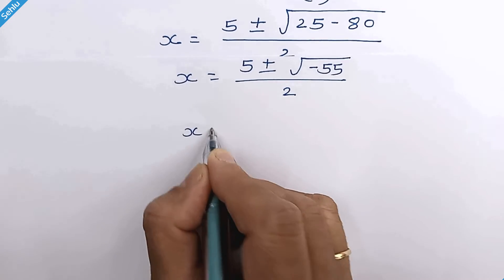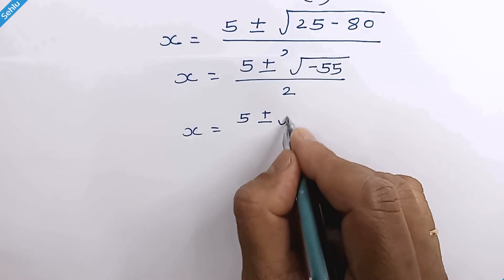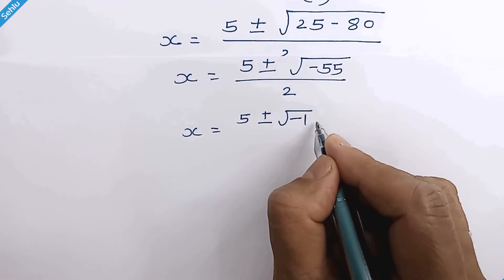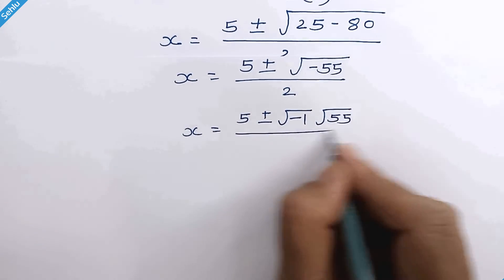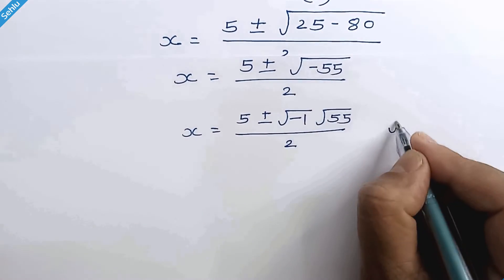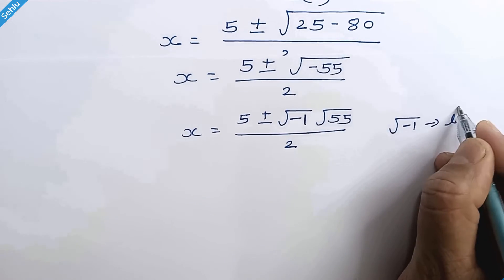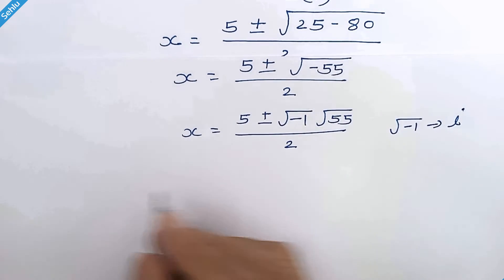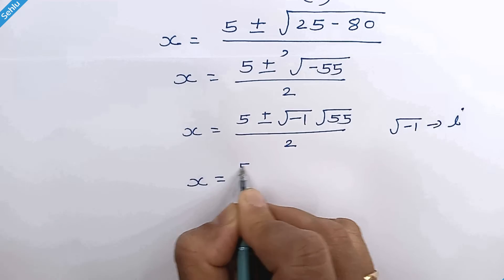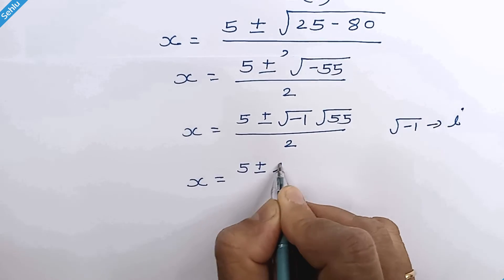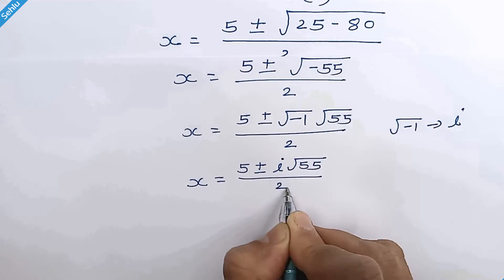So x is equal to 5 plus or minus square root of negative 1 times square root of 55 over 2. Now, square root of negative 1 is the imaginary number known as iota. So we can write it as x is equal to 5 plus or minus iota times square root of 55 over 2.